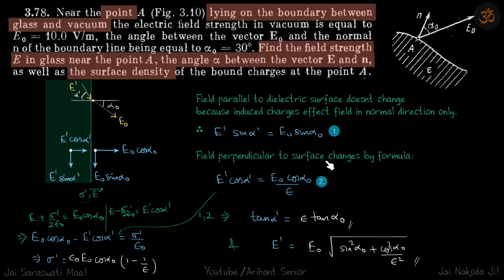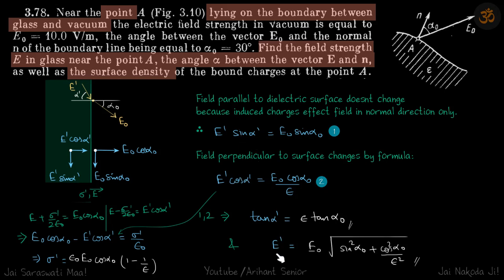The field perpendicular to the surface changes by the standard dielectric formula: E outside divided by E inside equals epsilon. So E naught cos alpha naught divided by E dash cos alpha dash equals epsilon. We now have two equations and two unknowns, E dash and alpha dash. Dividing the equations eliminates E dash and gives the value of alpha dash. Squaring and adding eliminates alpha dash and gives the value of E dash. This completes the first part — finding the field strength and angle inside.